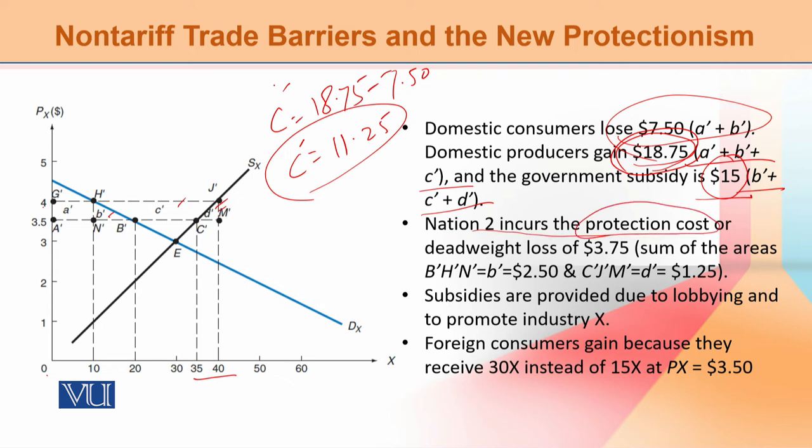اب nation 2 کو protection cost برداشت کرنی پڑ رہی ہے۔ جسے ہم dead weight loss بھی کہتے ہیں — یہ concept ہم نے پہلے discuss کیا تھا کہ جب کوئی amount نہ consumer کے پاس جا رہا ہو نہ producer کے پاس، اسے dead weight loss کہتے ہیں۔ یہ inefficiencies کی وجہ سے rise ہوتا ہے۔ Protection cost آ رہی ہے دو areas کی وجہ سے: B-bar, H-bar, and N-bar.